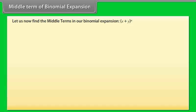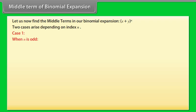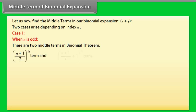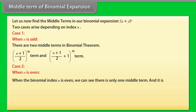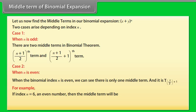Middle term of binomial expansion: Let us find the middle terms in binomial expansion of x plus y raised to power n. Two cases arise depending on index n. Case 1: When n is odd, there are two middle terms — the (n+1)/2 th term and the (n+1)/2 + 1 th term. Case 2: When n is even, there is only one middle term, which is t(n/2 + 1). For example, if n equals 6, the middle term is t(6/2 + 1) equals t4.